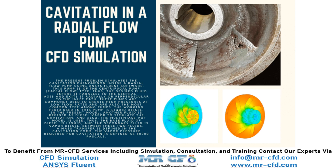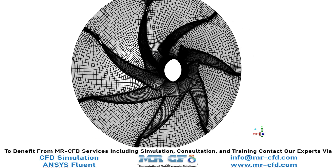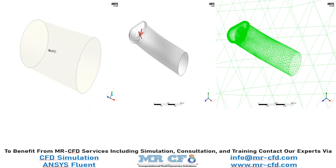In this project we will simulate the cavitation process in a radial flow pump. The present model is designed in three dimensions using BladeGen software. The meshing of the present model has been done using TurboGrid software. The current model is also designed in three dimensions using DesignModeler software, and the meshing is done using ANSYS Meshing software.